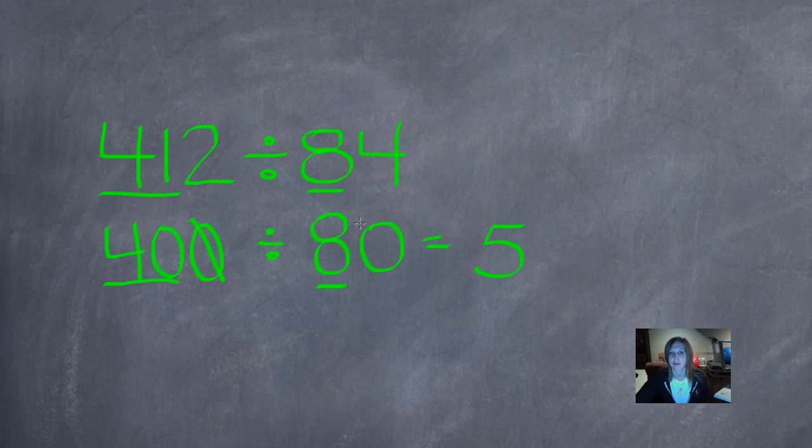So I'm going to use the battle of the zeros strategy to get rid of those. So this guy is going to capture this guy, and I have no zeros. 400 divided by 80 is 5.